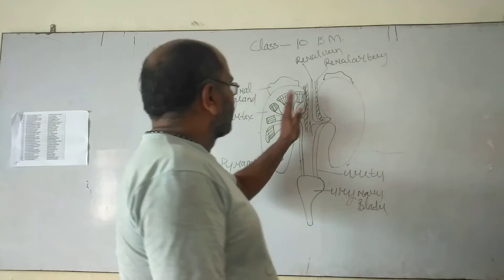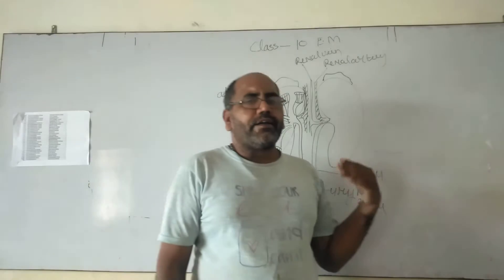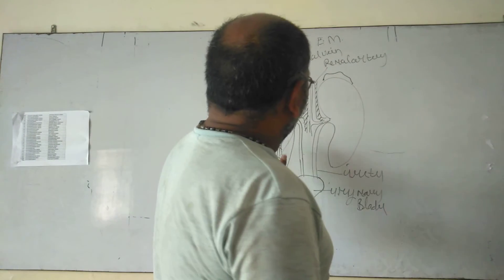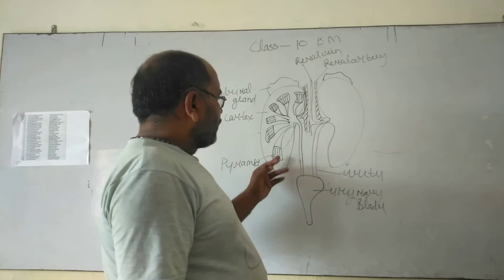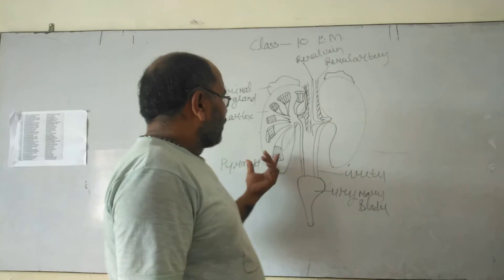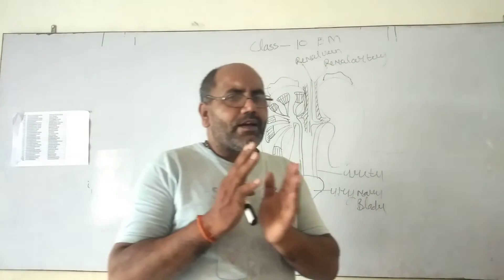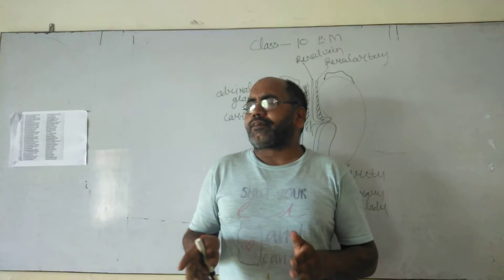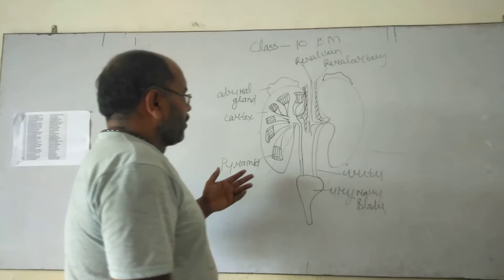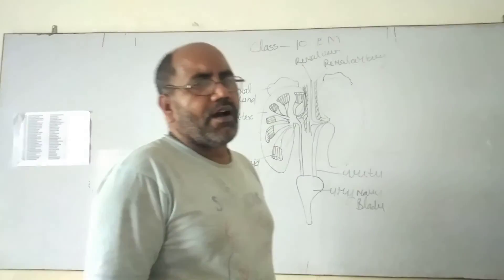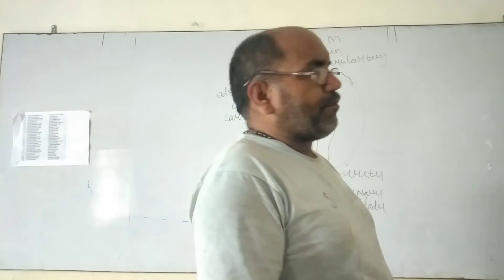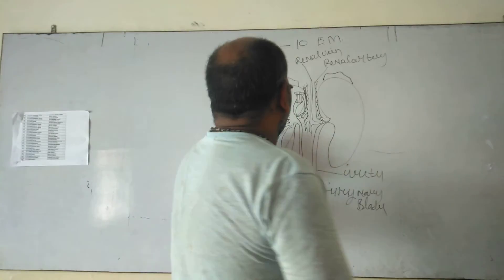Internally, the kidneys are divided into two parts: the cortical region, which is the outer part, and the medullary region, which is the inner part. There are triangular or funnel-shaped structures called pyramids, visible in the figure. Pyramids are composed of aggregations of nephrons. The nephron is the functional unit of the kidney, and each kidney has about one lakh nephrons and 10 to 12 pyramids.